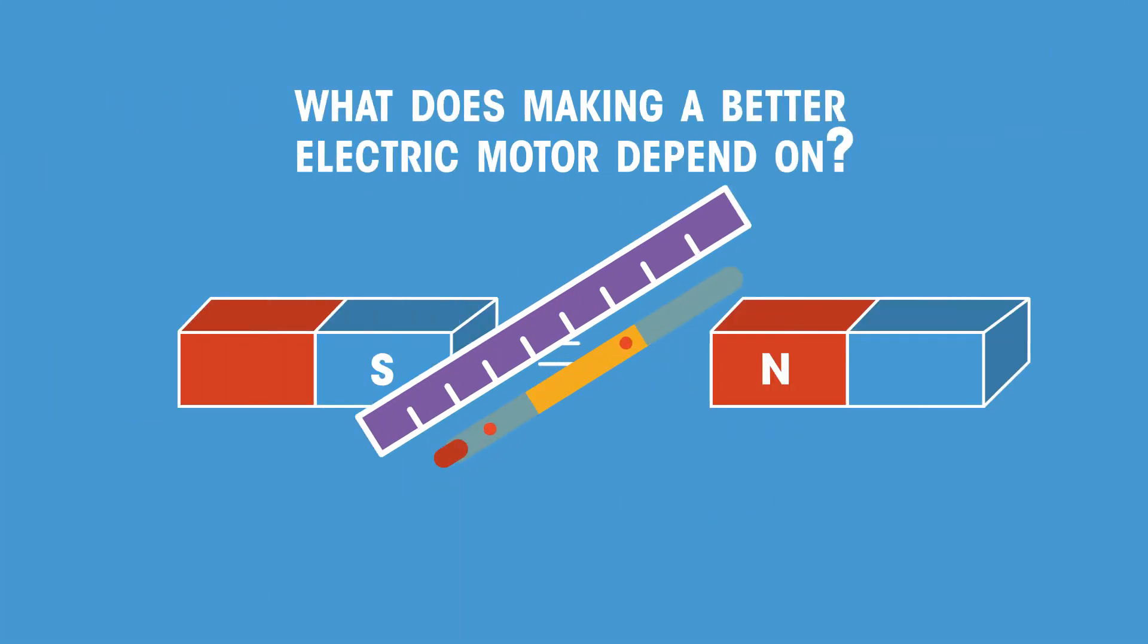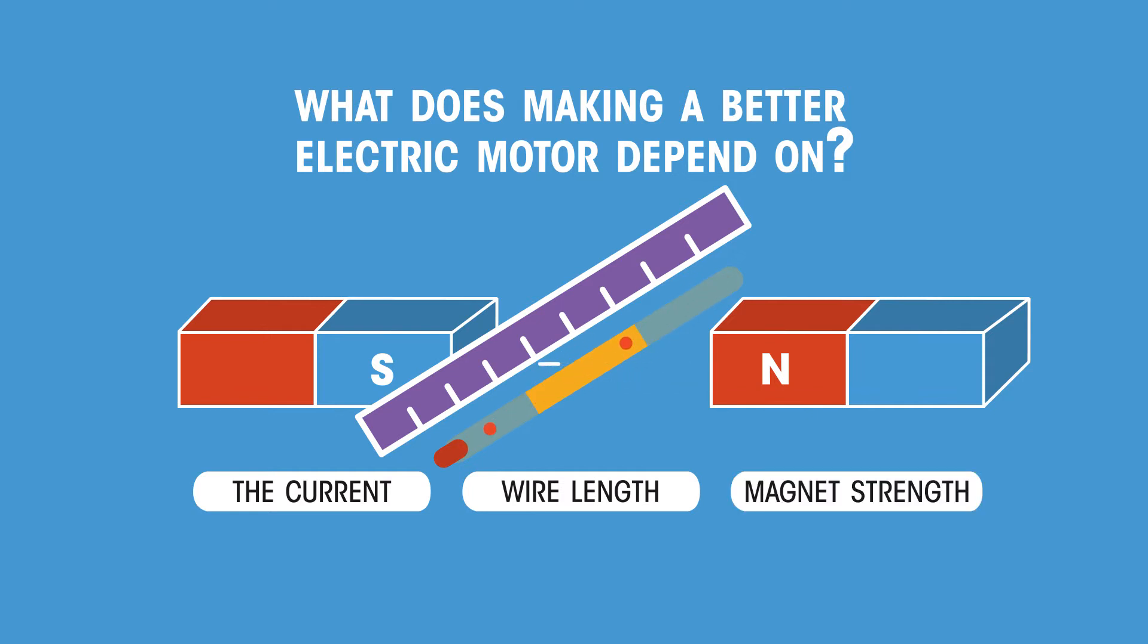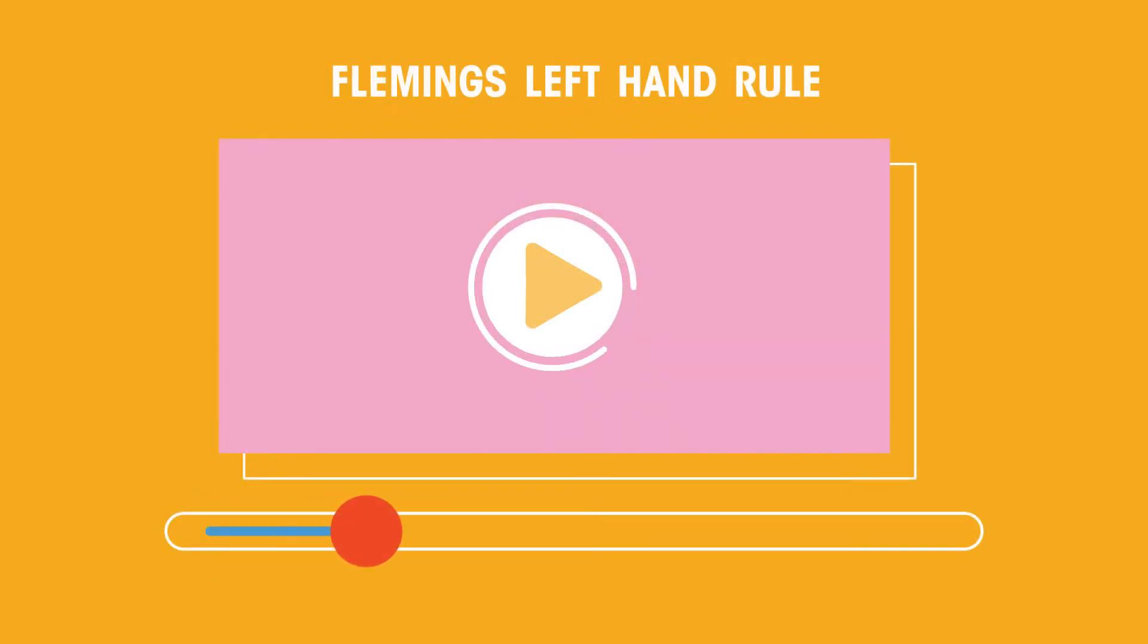What does making a better electric motor depend on? The current, the length of wire, the strength of the magnets. You will have seen the motor effect explained in another video. You may want to have a look at it again. In this video we explore what factors affect the size of the force on a wire carrying an electric current when it's placed in a magnetic field.